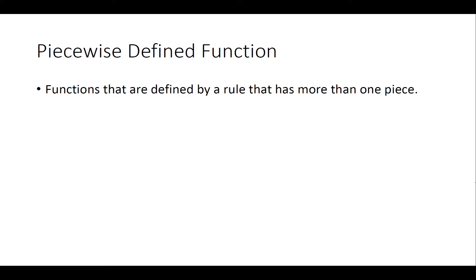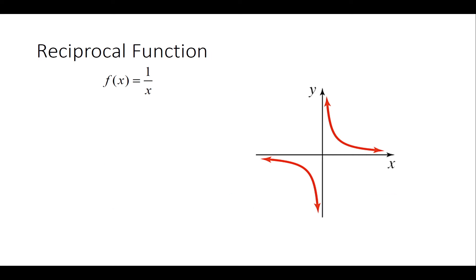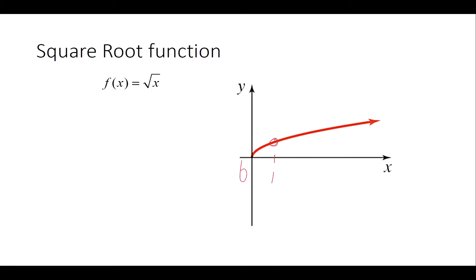A piecewise function is a function defined by a rule that has more than one piece. We use more than one function combined over different domains to define a new function. For example, the absolute value of x is a piecewise function — to the left of zero and to the right of zero there are two different linear functions combined together. You can combine any basic functions over different domains to make a piecewise function.